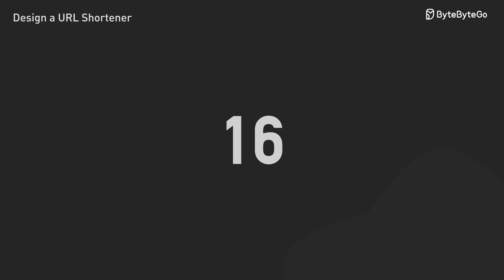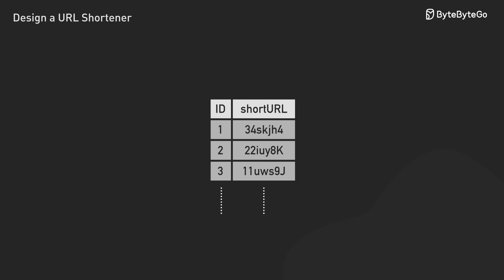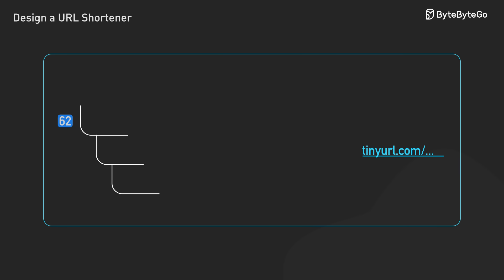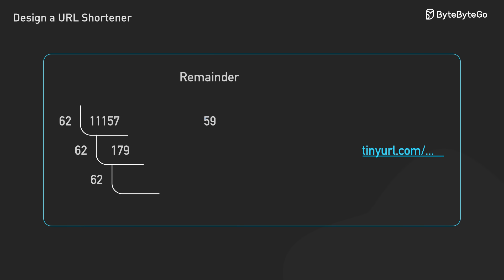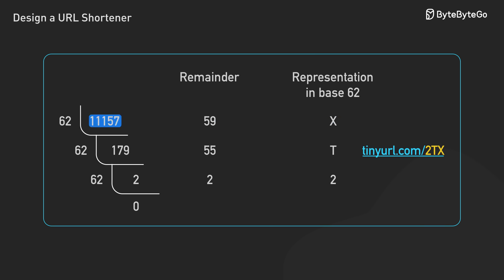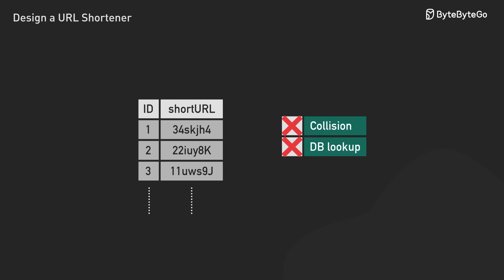The second approach is way more elegant. Instead of hashing, you just count. Every time someone wants to shorten a URL, give it the next number in sequence: URL number 1, number 2, number 3, and so on. Then convert that number to what's called base 62. Here's how that works — let's say you're on URL number 11,157. To convert to base 62, you divide by 62 over and over, keeping track of the remainders. 11,157 divided by 62 is 179, remainder 59. 179 divided by 62 is 2, remainder 55. 2 divided by 62 is 0, remainder 2. Now read the remainders backwards: 2, 55, 59. In base 62, 2 stays as 2, 55 becomes T, 59 becomes X. So URL number 11,157 becomes 2TX, and your short URL is tinyurl.com/2TX. No collisions, no database lookups to check if it's taken — just clean math.